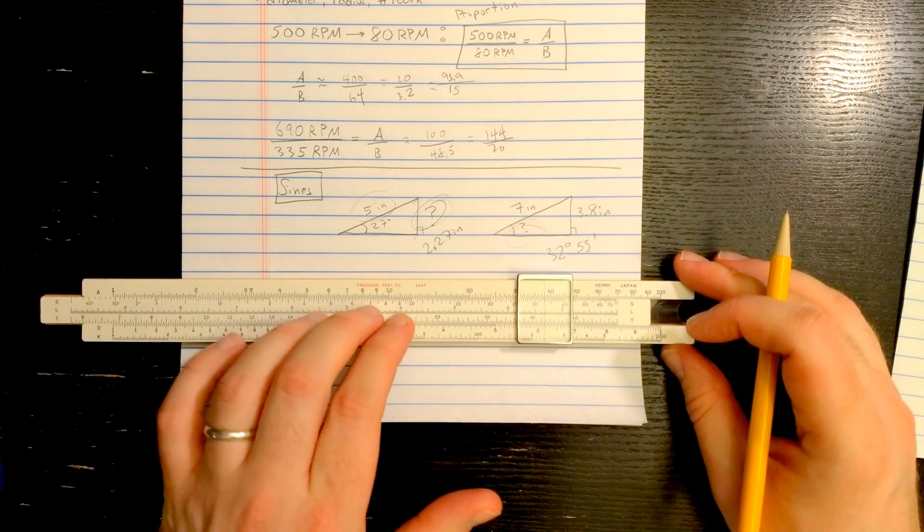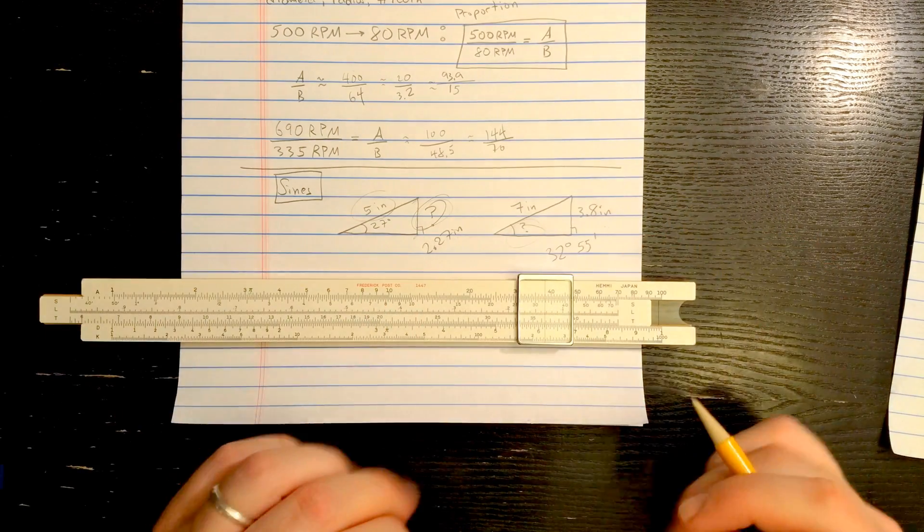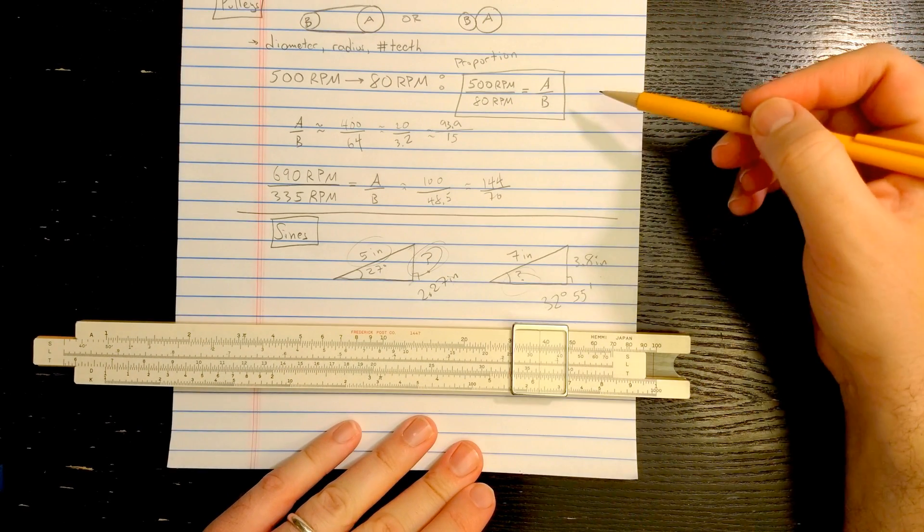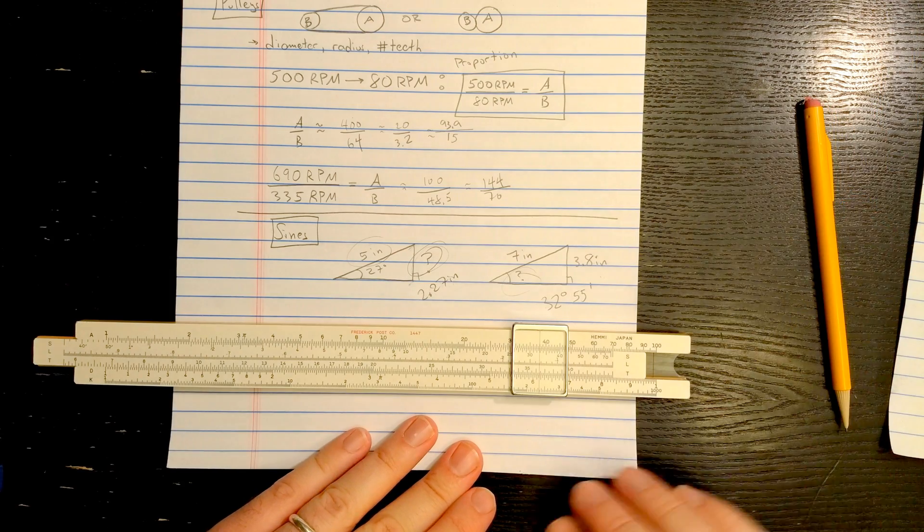Okay. So that's how you use the S scale to solve triangles like this, and how you use A and B to solve proportions. Hope this video was helpful.